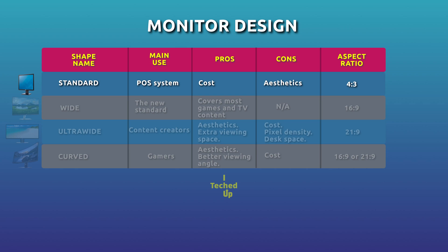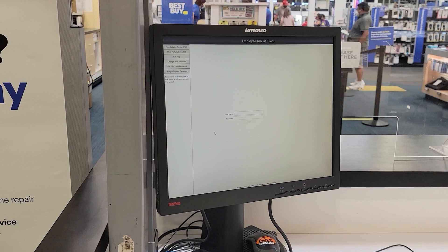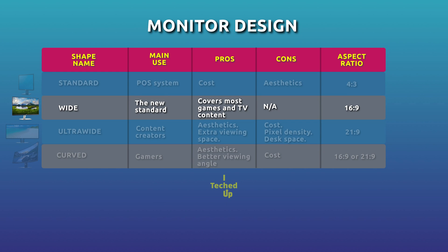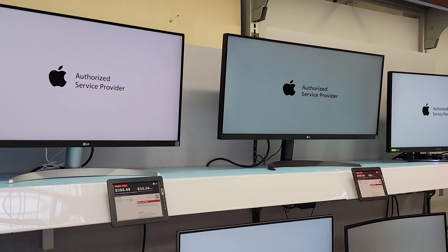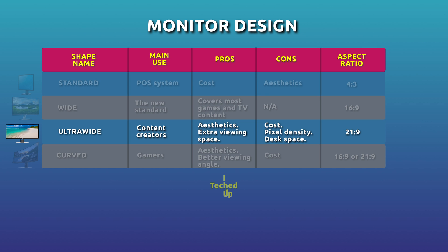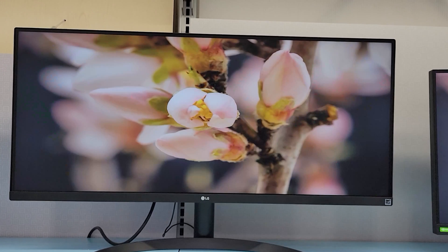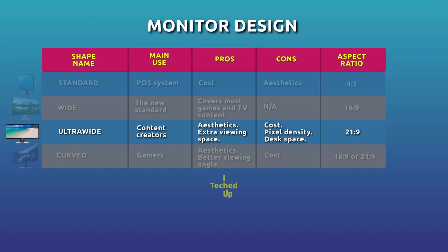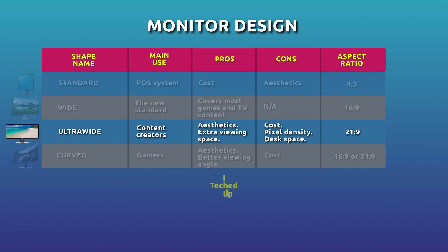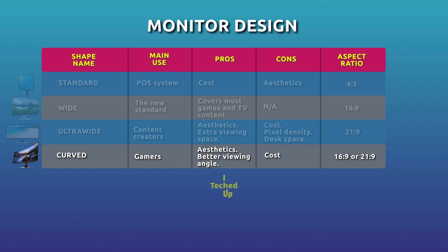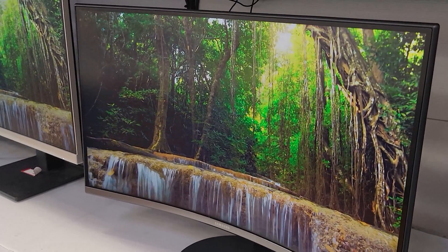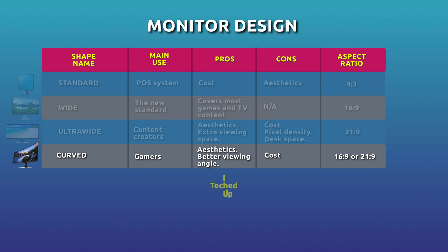The shape of the monitor has very little to do with performance — it's really about personal preference. Standard design supports an aspect ratio of 4:3; you don't see many of these unless it's a specialty monitor like a POS system. Wide design is the new standard; most monitors today are widescreen with a 16:9 aspect ratio. Ultrawide design is popular with gamers and creative professionals — if you want a more cinematic experience or more horizontal real estate, opt for an ultrawide with a 21:9 aspect ratio. Curved design looks cool and allows for a better range of viewing angles with minimal distortion compared to a flat screen.